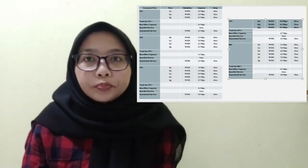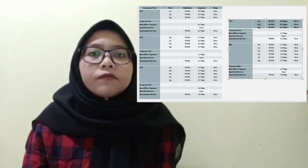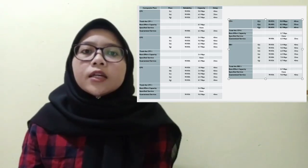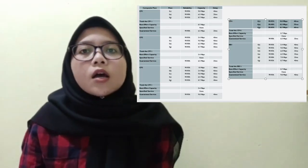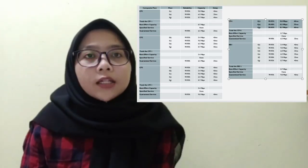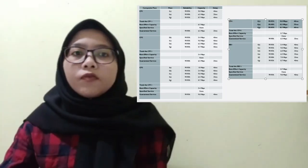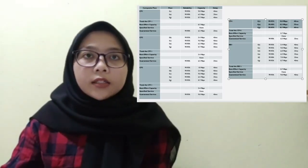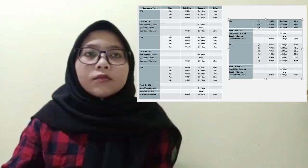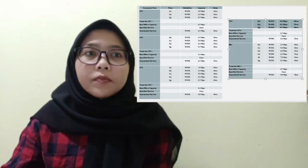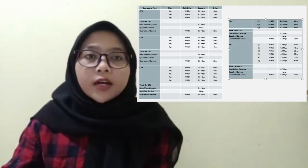Composite flow 3 has a best-effort capacity of 5.4 Mbps, specified service 9, and guaranteed service of 99.95% with a capacity of 9.8 Mbps and a delay of 40ms. Composite flow 4 has a best-effort capacity of 5.5 Mbps, specified service 9, and guaranteed service of 99.98% reliability, 6.5 Mbps capacity, and 35ms delay.